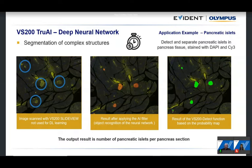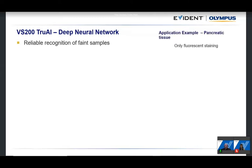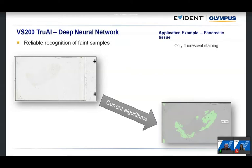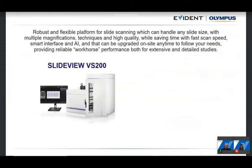Once set up, the AI workflow becomes automatic and very efficient — a scanner should save you time and let you acquire data as fast as possible. Another AI application is recognizing faint samples: for a very thin fluorescent section that is difficult for traditional threshold algorithms to detect, the VS200 True AI can accurately recognize the complete sample area, ensuring the system automatically acquires the data you need.